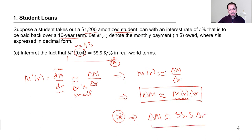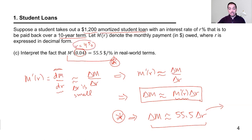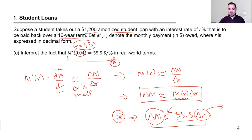In English: if I apply this to our particular setting, the change in M is approximately the derivative — in this case, 55.5 — times delta R. If the interest rate changes by delta R, the monthly payment changes by approximately 55.5 times delta R.